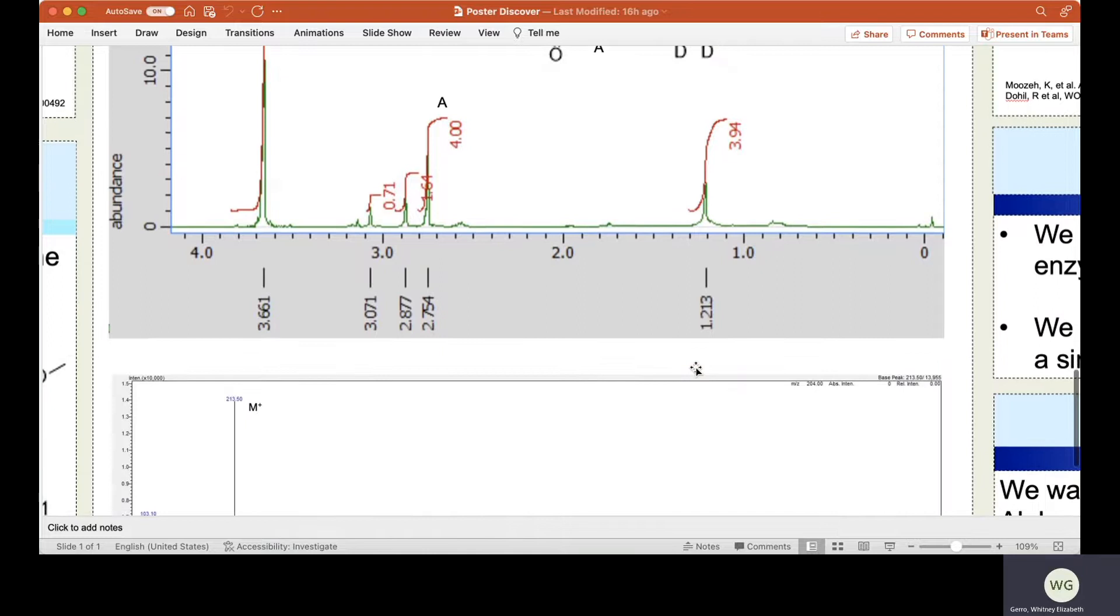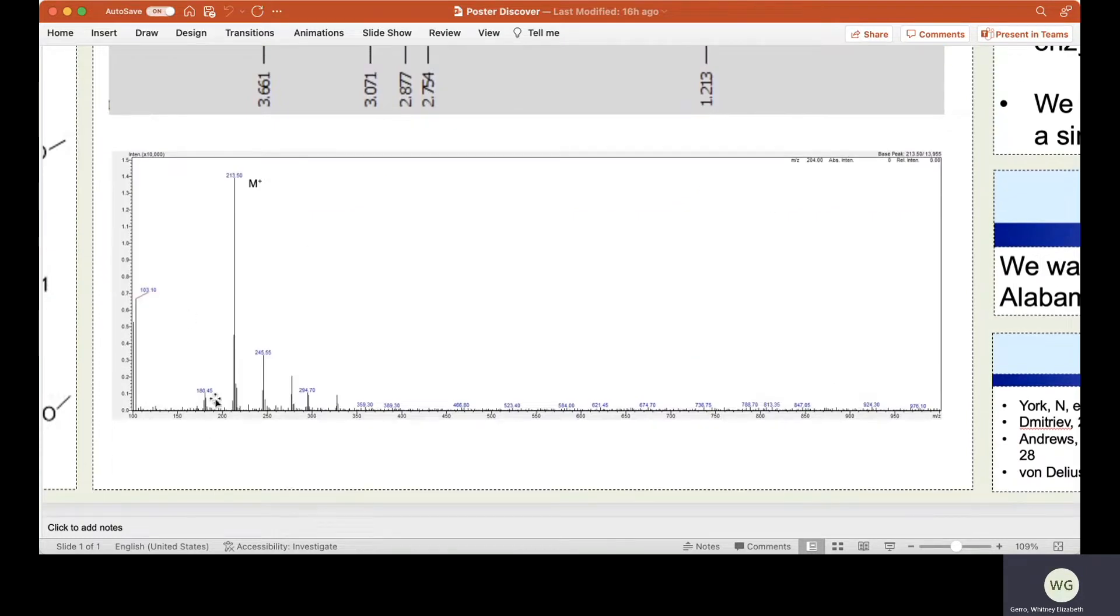Our NMR spectra is corroborated by our mass spectrum. Here, we have our base peak at about 214, which corresponds with our deuterated molecule. However, we likewise see other peaks that we cannot account for.